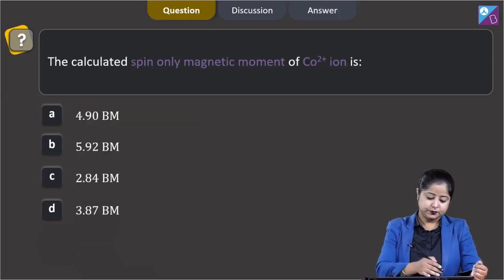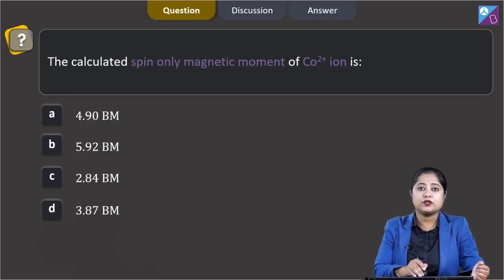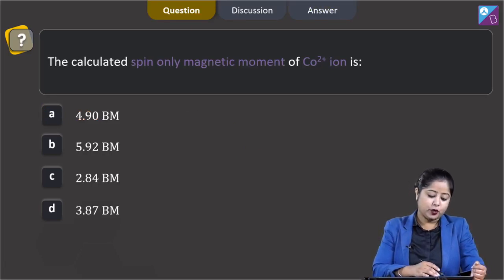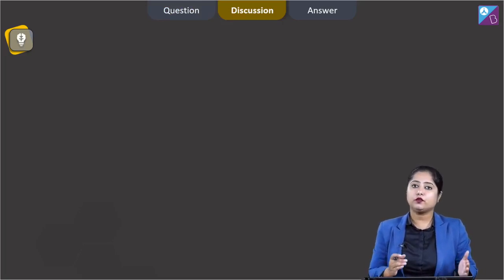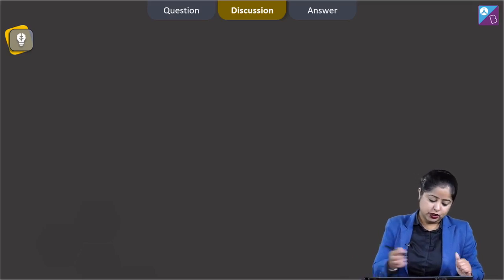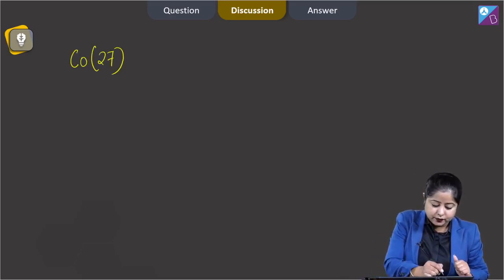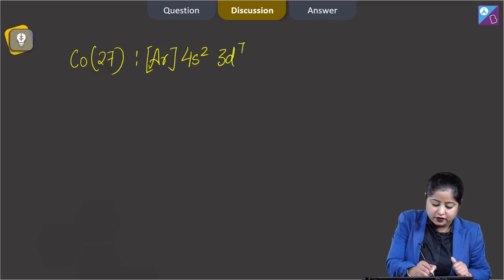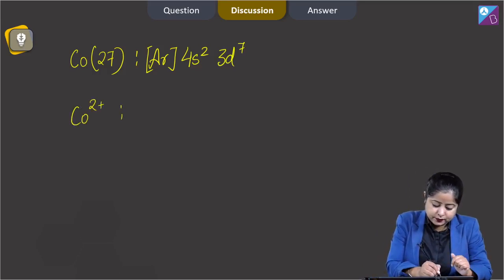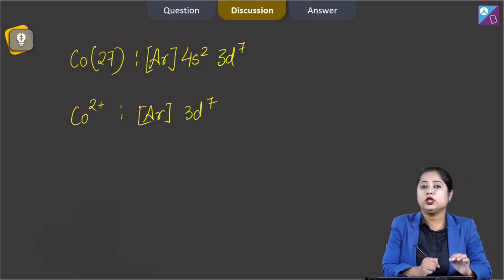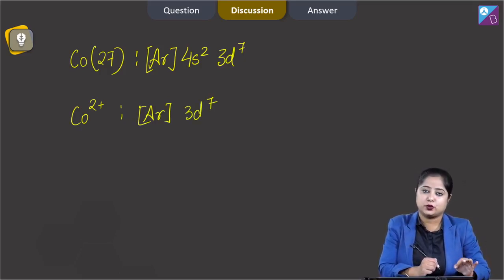Next question: the calculated spin-only magnetic moment of Co²⁺ ion. Options are 4.90 BM, 5.92 BM, 2.84 BM, and 3.87 BM. The atomic number of cobalt is 27, so its electronic configuration is [Ar] 4s² 3d⁷. In the 2+ oxidation state, Co²⁺ has configuration [Ar] 3d⁷, as the two electrons are removed from the 4s subshell.